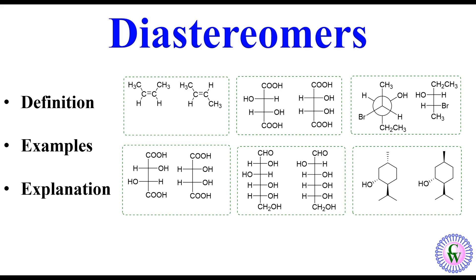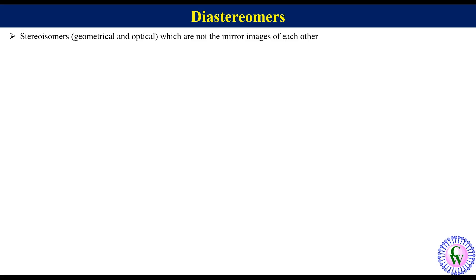Hello and welcome to my YouTube channel Kemviz. In this video we are going to discuss an important term used in stereoisomerism called diastereomers. Diastereomers are defined as stereoisomers — including both geometrical and optical — which are not mirror images of each other.